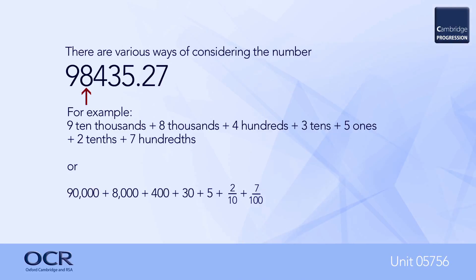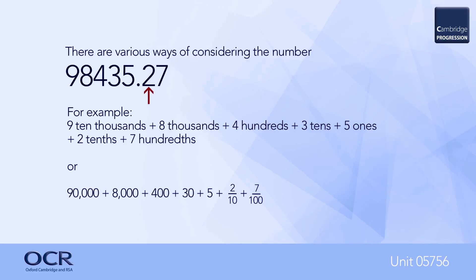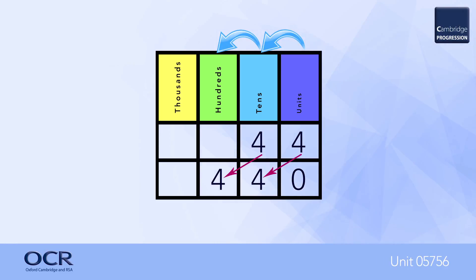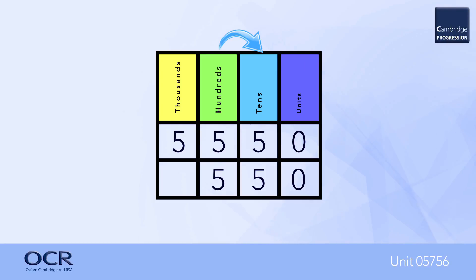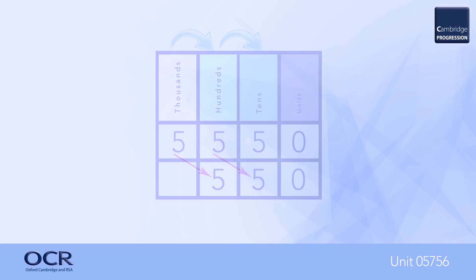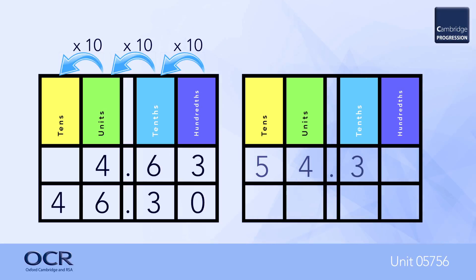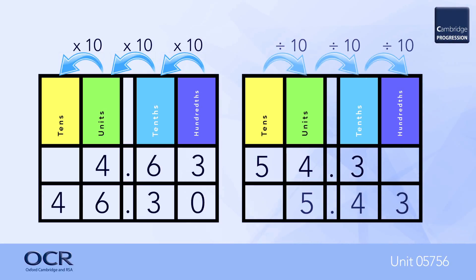Or: ninety thousand plus eight thousand plus four hundreds plus thirty plus five, plus two tenths, plus seven hundredths. As the column headings move right to left they increase by ten, demonstrated here by the multiplication of forty-four by ten — zero now appears in the unit column. In reverse, from left to right, we can see the division of five thousand five hundred by ten. We can also see the effect of multiplying 4.63 by ten and dividing 54.3 by ten.